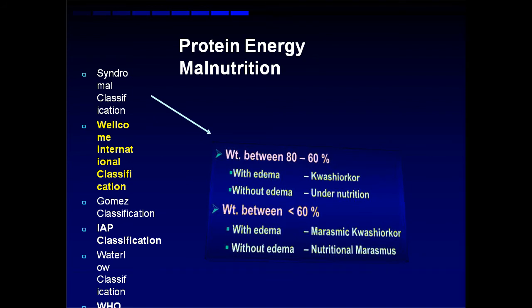Then comes the Wellcome International classification. When the weight is between 80 to 60 percent, if it is with edema, it is Kwashiorkor; if without edema, it is undernutrition. When the weight is less than 60 percent specifically, with edema it is marasmic Kwashiorkor, and without edema it is nutritional marasmus. Note that marasmus has a lower percentage of weight compared to Kwashiorkor. The Kwashiorkor baby also has loss of nutrients, but it is hidden.